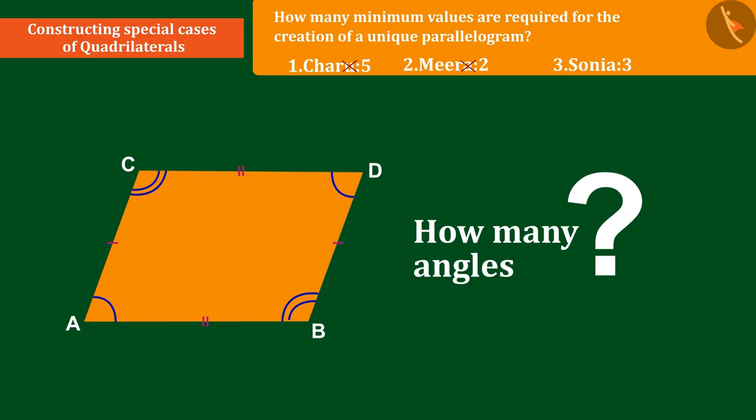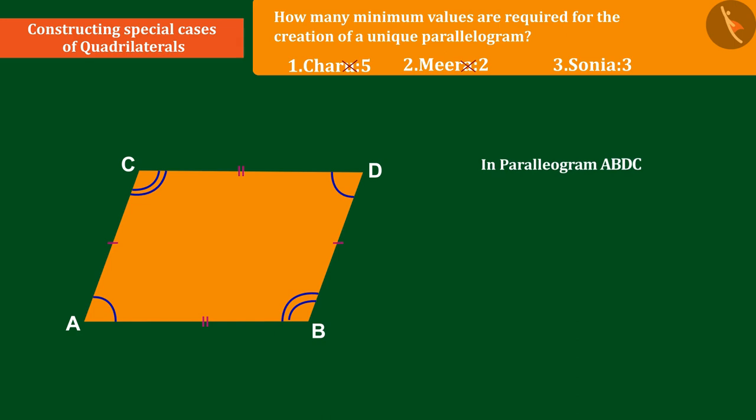Let us discuss this. Yes, if we know the measurement value of a single angle, then the measurement value of all the angles can be found since the angles of the parallelogram have equal measurement values, and the adjacent angles are complementary.